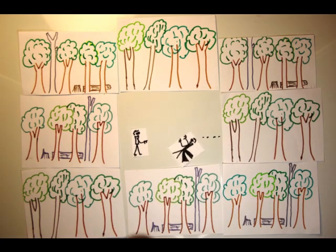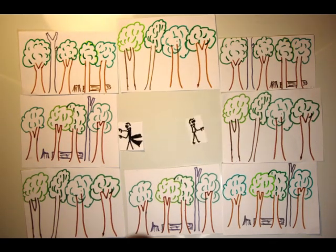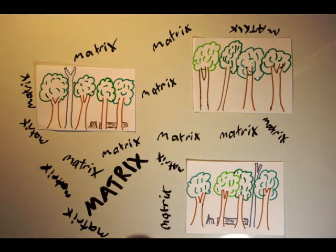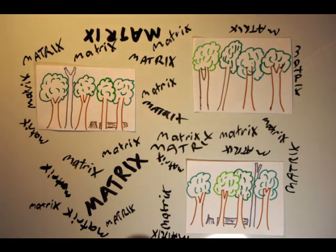In Ecology, The Matrix is not about people in long trench coats dodging bullets while plugged into a hyperreal computer program. When we talk about The Matrix in Ecology, we are talking about the areas that surround patches of remnant vegetation.